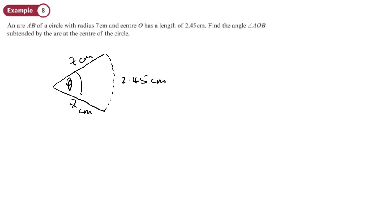So if we know that the arc length is the radius times the angle at the center, all we need to do is rearrange it. If we want to find the angle at the center, it's the arc length divided by the radius that will give us the angle at the center. So 2.45 divided by 7, that's it, that's all we need to do.